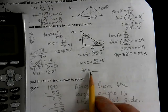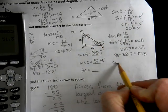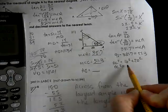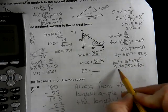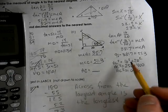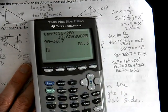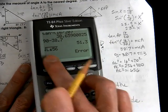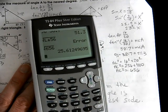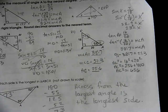For the last side AC, we use the Pythagorean theorem: 16 squared plus 20 squared equals AC squared. That's 256 + 400 = 656. Taking the square root of 656 gives AC = 25.6.